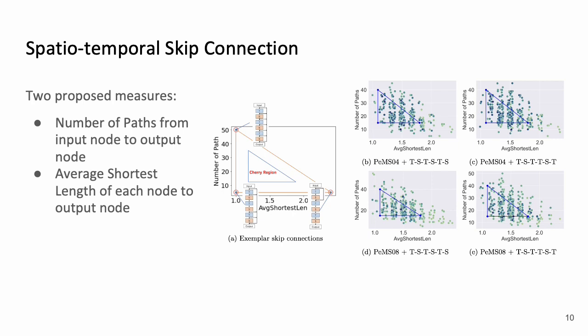Here we propose two other measures which is number of paths from the input node to output node as in the directed acyclic graph and the second one, average shortest length of each node to the output node.